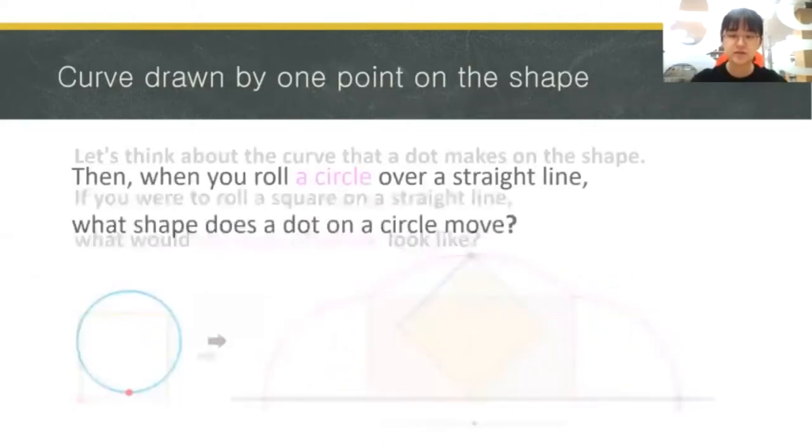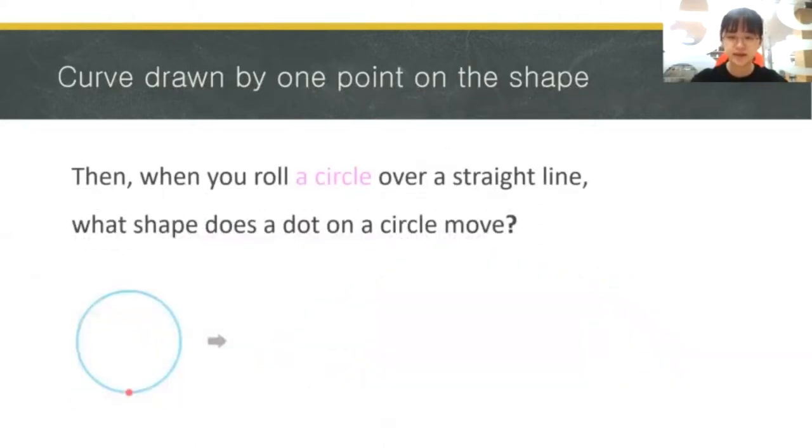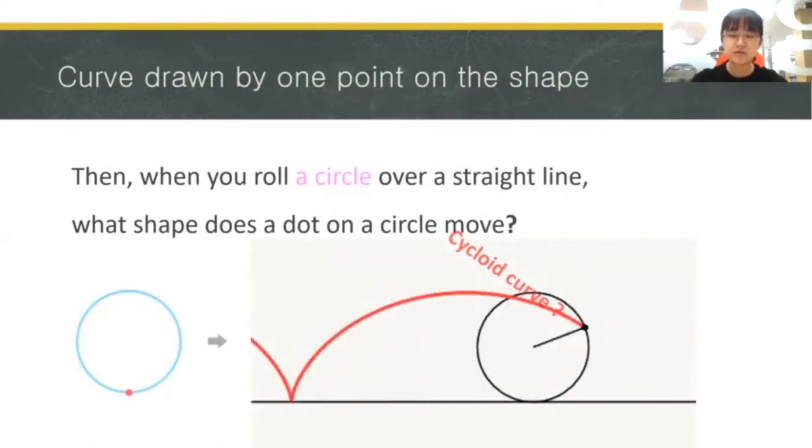Then how would a dot on a circle leave its trace? As you can see, it would draw this certain curve, which is called a cycloid.